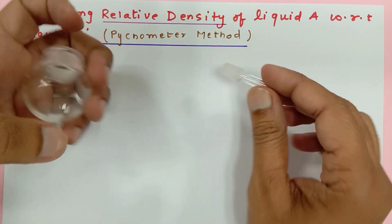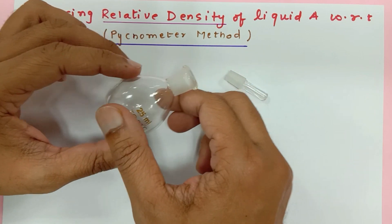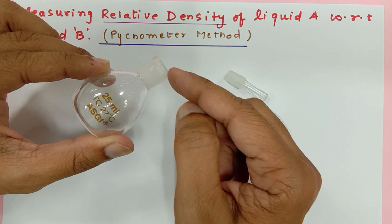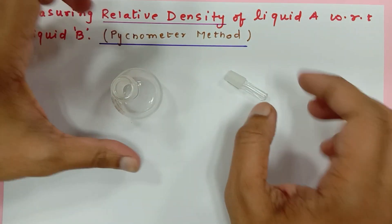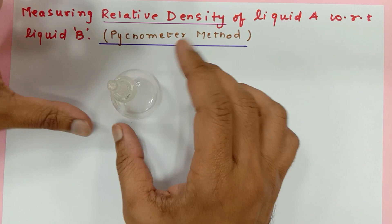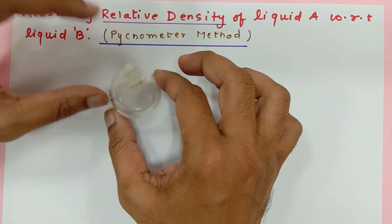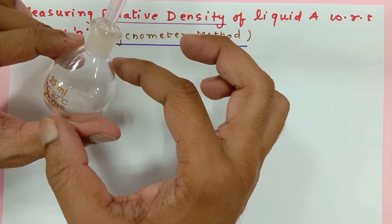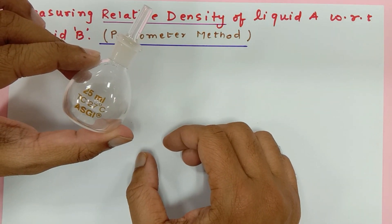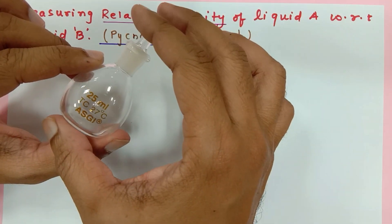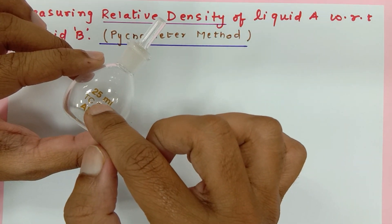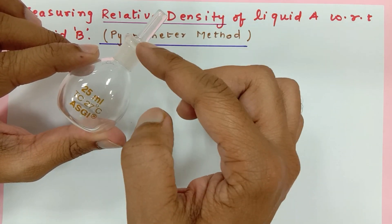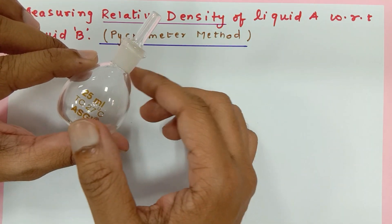This part is called the stopper. How does it work? You fill this bottle completely with any liquid until it reaches the top and let the liquid overflow. Then you put the stopper and gently press it, so the extra liquid overflows from this space out, and the liquid remaining inside will be exactly 25 ml. It can hold any liquid and when completely filled with the stopper, its volume will be 25 ml.